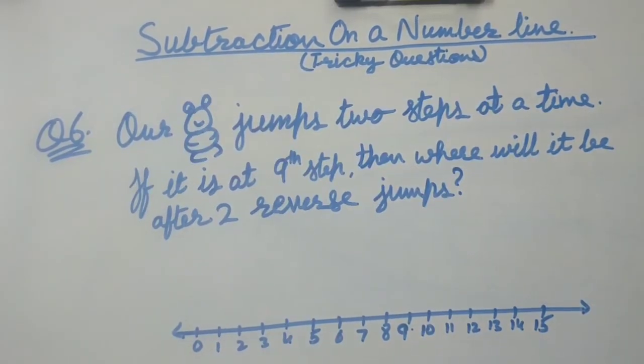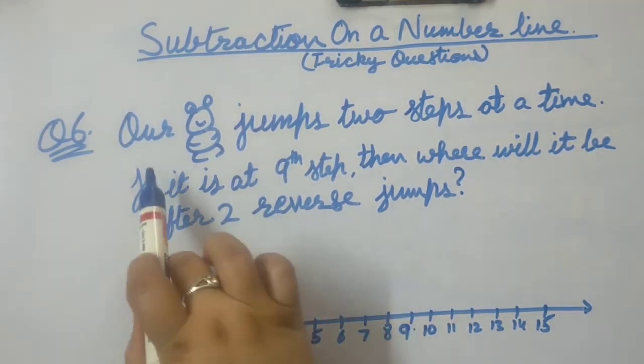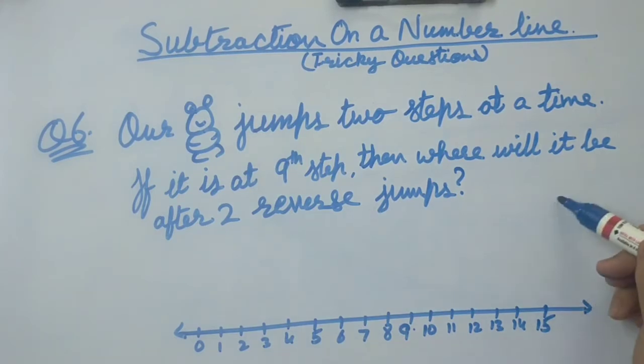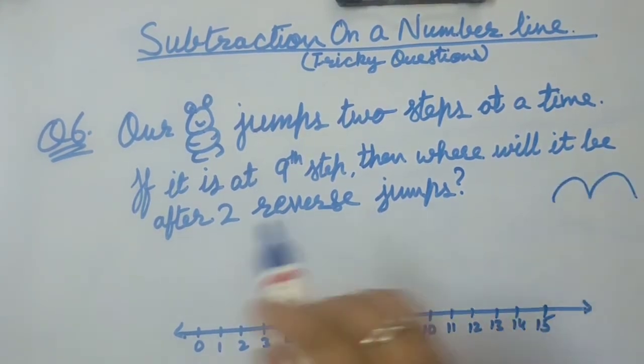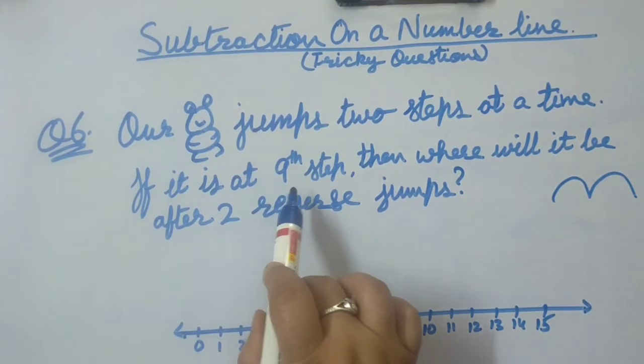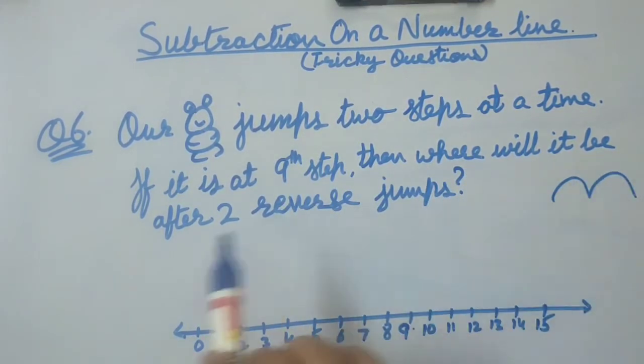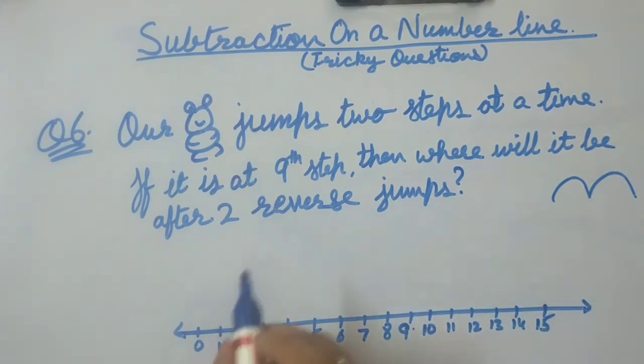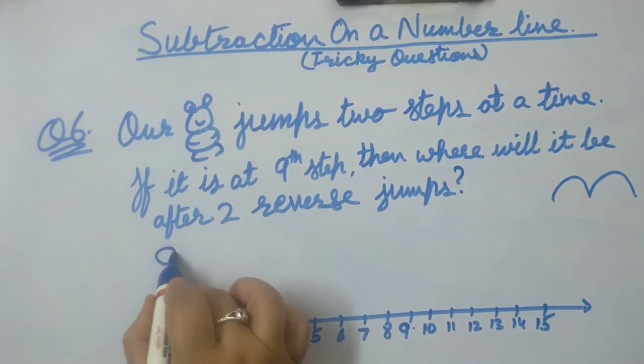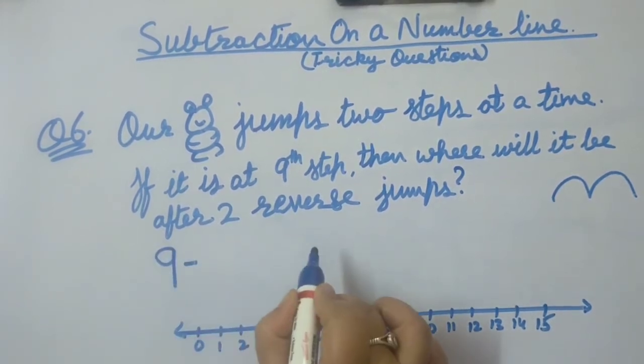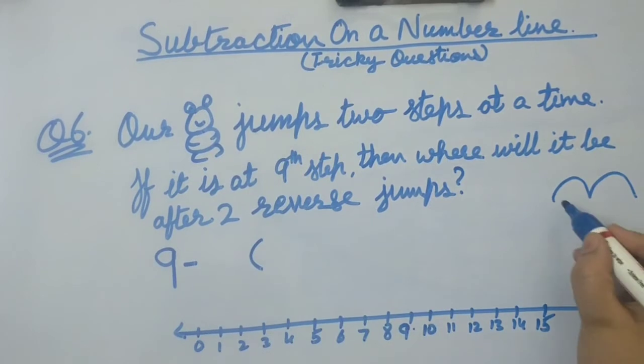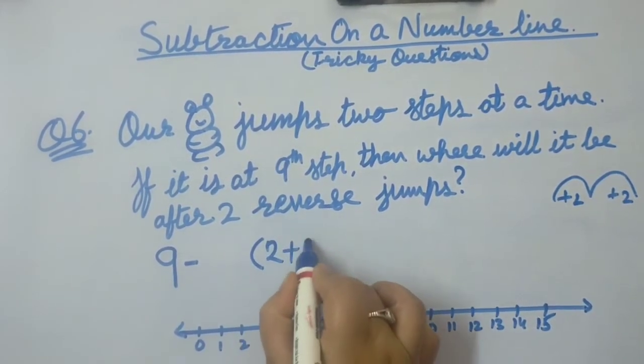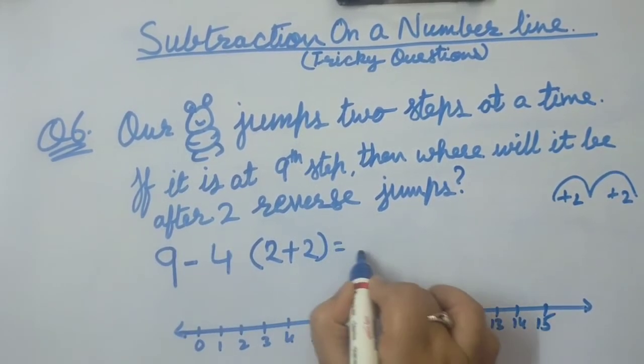Question number 6 is a different question. See, our froggy jumps 2 steps at a time. That means it takes 2 numbers at a time. If it is at 9th step, then where will it be after 2 reverse jumps? Now the question is tricky. Let's take out. It was at number 9 minus 2 reverse steps. That means plus 2 plus 2. 2 plus 2 equals 4. So 9 minus 4 equals dash.